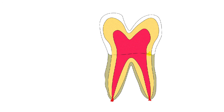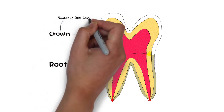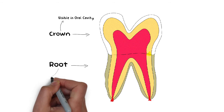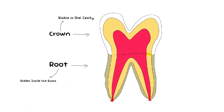Before starting, I want to make some terminologies clear. A tooth has two parts: first is the crown and the other one is the root. The crown is usually the portion of the tooth that is visible in our oral cavity or mouth, while the root is the portion embedded within our gums. In situations like gingival recession the root might also be visible, but generally the root is embedded within the gums while the crown is the visible portion.